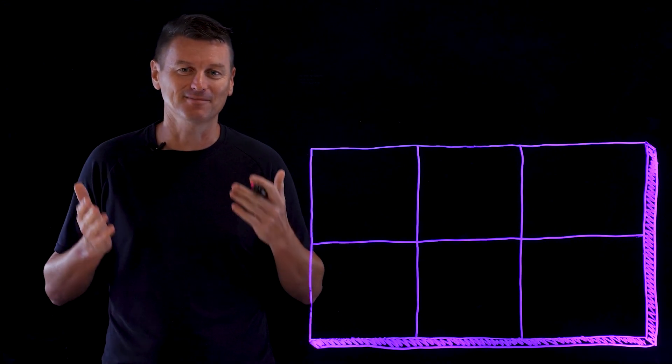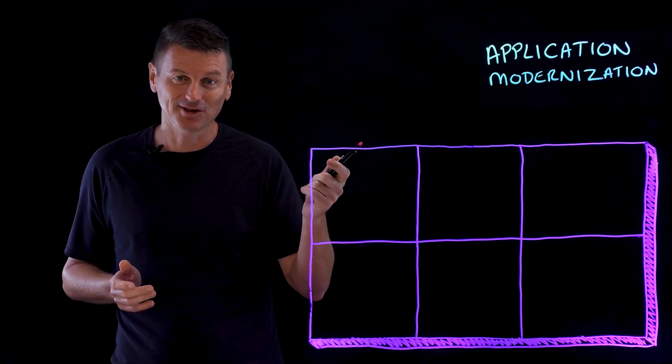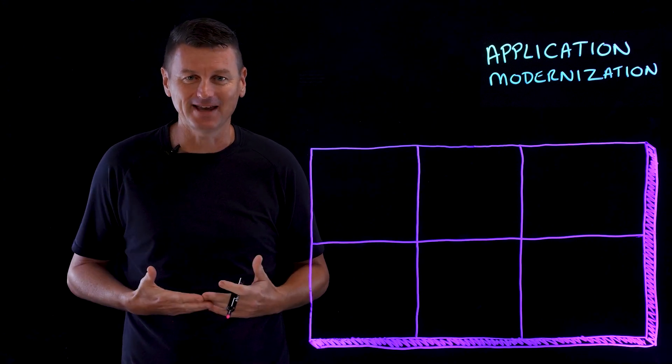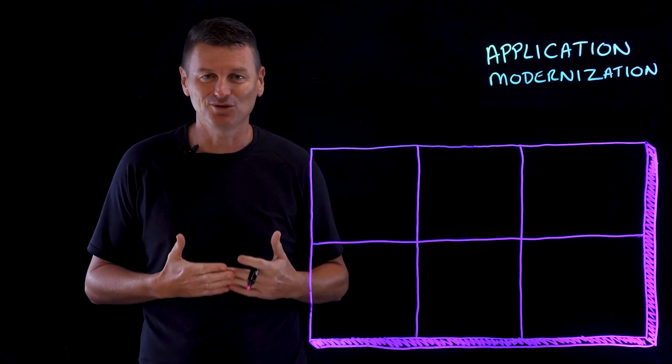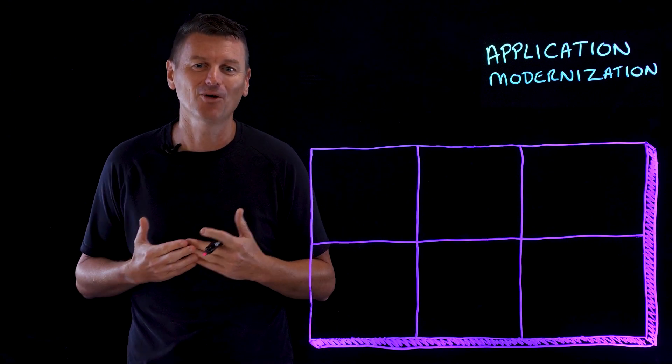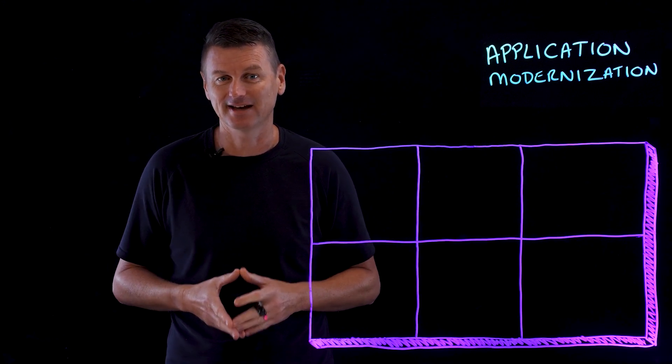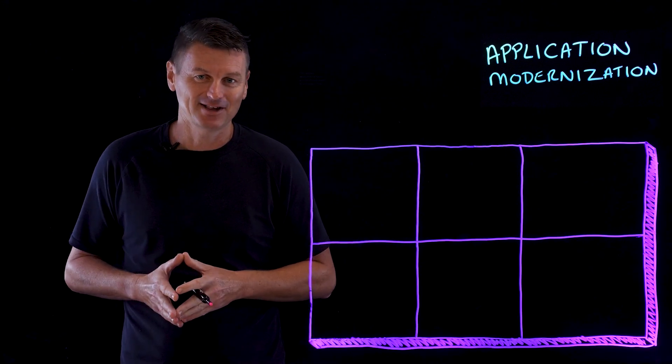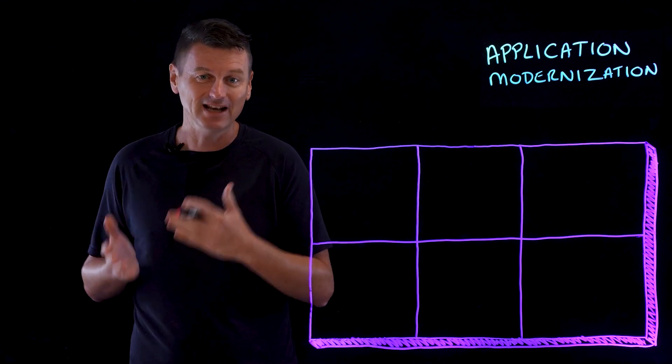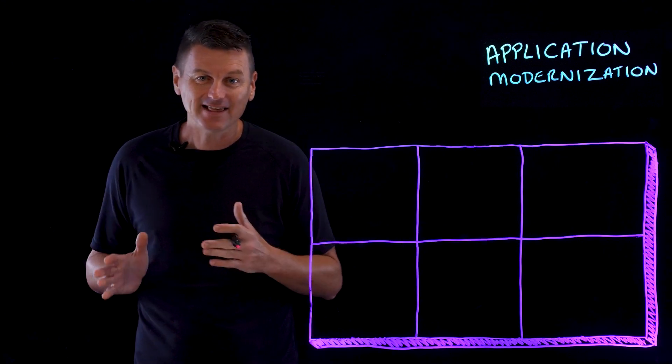So first, let's define some terms, and we'll start with application modernization. Now, this is about bringing legacy applications up to speed to meet current and future needs. It's the process of updating traditional functionality to incorporate modern technologies, modern capabilities, and modern architectures. And look, legacy applications have powered businesses for decades. They are generally resilient and reliable. No bad thing. But as IT evolves,